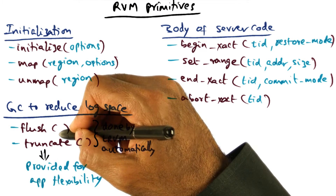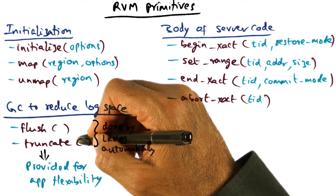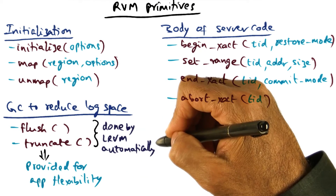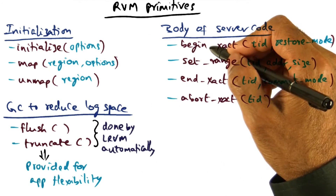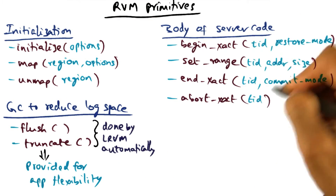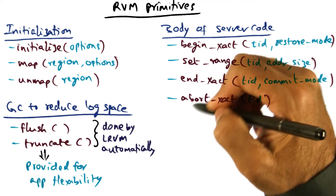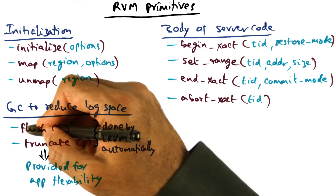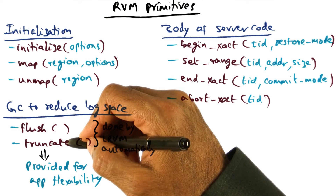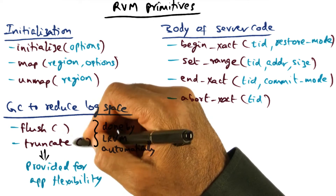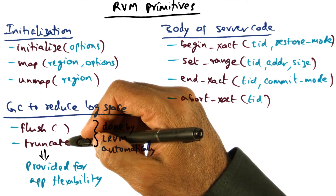Flushing the log segment to the disk as well as truncating the log segment once they have been applied to the external data segments are all done automatically by RVM. The application developer doesn't have to do anything other than initialize his virtual memory, the log segment he wants to use, and write the code containing critical sections bound by begin transaction and end transaction or abort transaction. But RVM also provides flush and truncate as primitives for flexibility, allowing the application to explicitly manage the persistence and application of the redo logs to the data segments if it chooses.